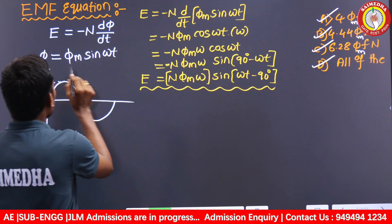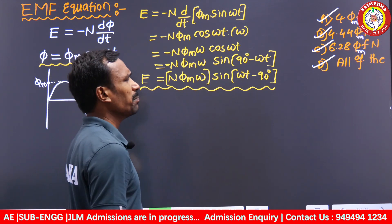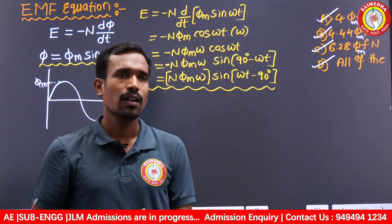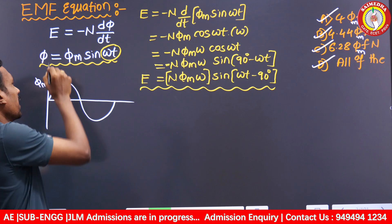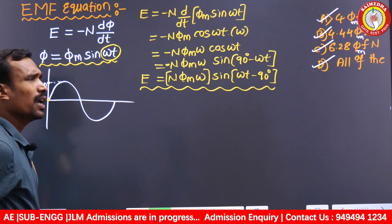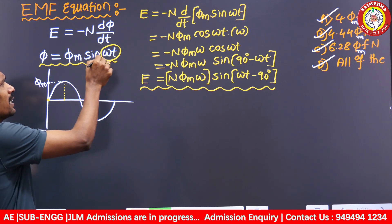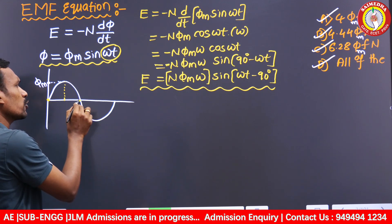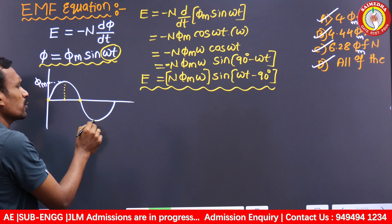This is the flux equation: Φ = Φ_M × sin(ωt), and this is the EMF equation: E = N × Φ_M × ω × sin(ωt − 90°). Remember: when ωt = 0, Φ = 0; when ωt = 90°, Φ = maximum; when ωt = 180°, Φ = 0; when ωt = 270°, Φ = negative maximum.